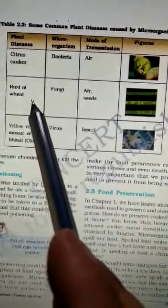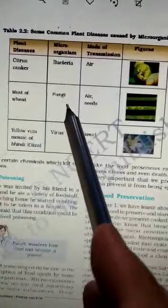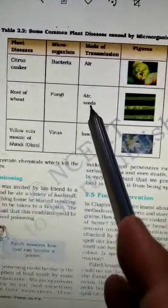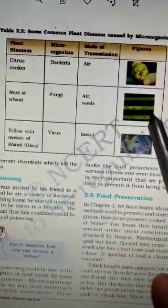Next one is rust of wheat. Microorganism is fungi. Mode of transmission is air and seed. And here is the picture.